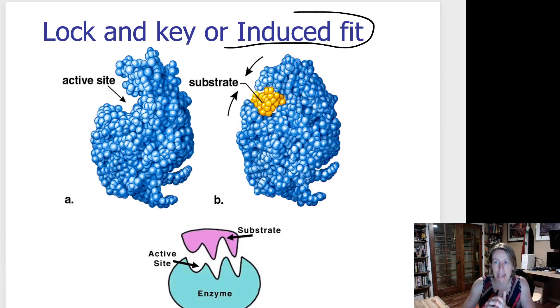When the substrate goes into the active site, the enzyme kind of shapes itself around it even better. The old way of thinking about this is lock and key - it's not wrong, it just misses some of the subtleties. The new way of thinking of this is an induced fit, like a hand going into a glove and modifying the glove a little bit.